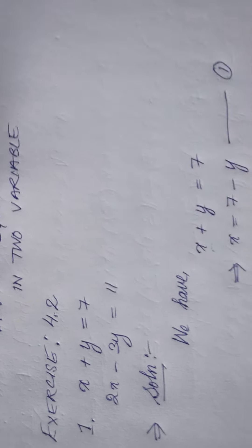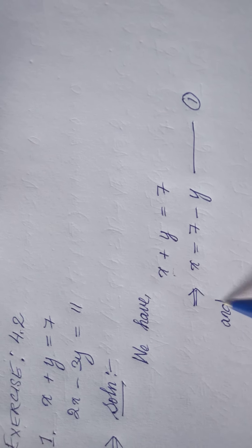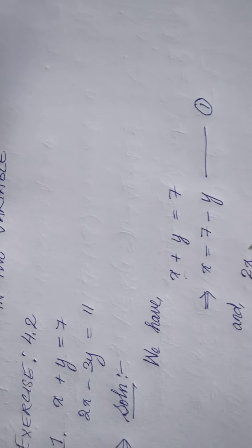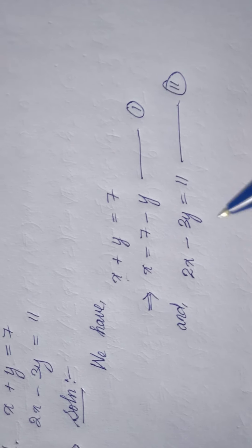And the second part we have 2x minus 3y equals 11, equation 2. We don't have to change the second part. If you change the first part you don't have to change the second part. If we change the second part we don't have to change the first part.